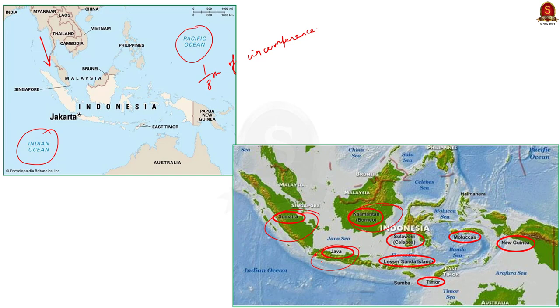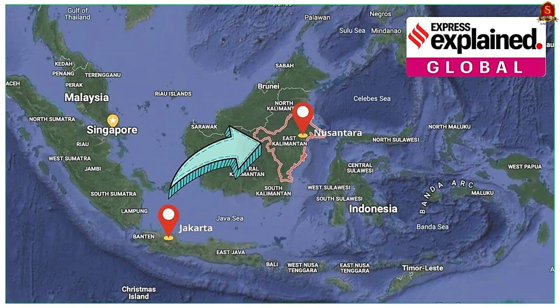Do you know the reason for the transfer of the capital? The reason was climate change. Jakarta is now sinking at an alarming rate, and to avoid further calamities, a planned capital city, Nusantara, is being built at the island of Borneo. Make note of this point — it can be asked in your prelims examination.